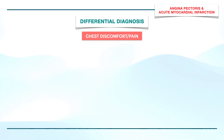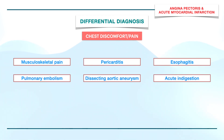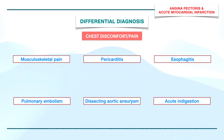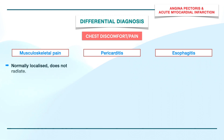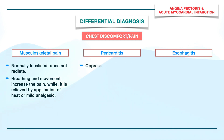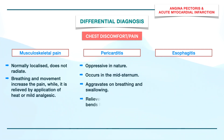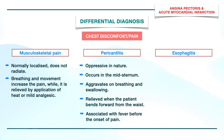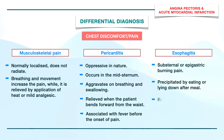Although the signs and symptoms of angina and MI are very specific, other diseases can produce similar manifestations and it is important to differentiate them. Musculoskeletal pain is normally localized, does not radiate, is increased on breathing and movement, and is relieved by application of heat or mild analgesics. Pain associated with pericarditis is oppressive, occurs in the mid-sternum, aggravates on breathing and swallowing, and is relieved when the patient bends forward from the waist. It is also associated with fever before the onset of pain. Esophagitis can present as sub-sternal or epigastric burning pain, precipitated by eating or lying down after a meal, and relieved by antacids.